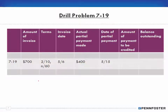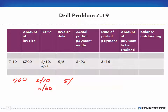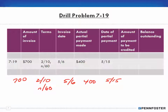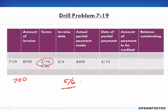So what do we have here? This is a bit more complicated. We have an invoice amount of $700 and the terms are 2/10 net 60. The invoice is dated May 6th, and there was a partial payment of $400 made on May 15th. The question is: was this partial payment made within the discount period? With a 2% 10-day term from May 6th, the discount period ends May 16th — so yes, the payment on May 15th falls within the discount period.